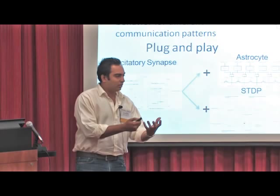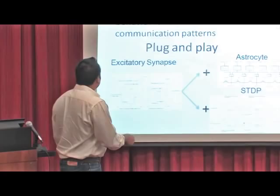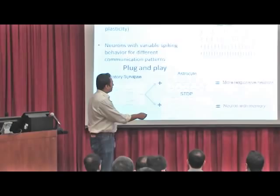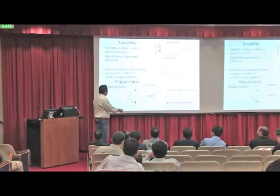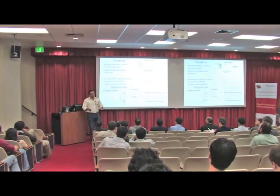A part of building this library is that the components should be plug and play. If you need to build a new neuron, that doesn't mean you go back to the drawing board. For example, if I take my excitatory synapse and build an astrocyte circuit and plug them together, I get more responsive neurons. If I take my excitatory synapse and plug in an STDP circuit, I get neurons with memory. So the library has to be plug and play.